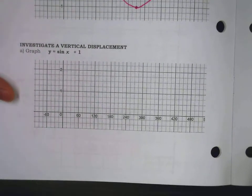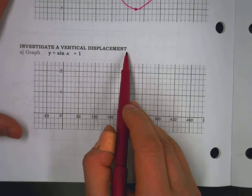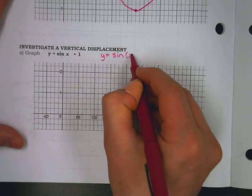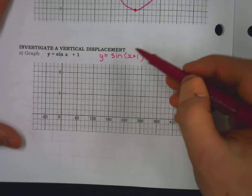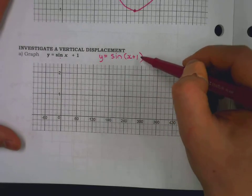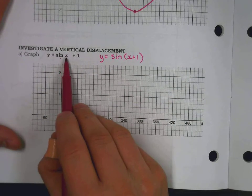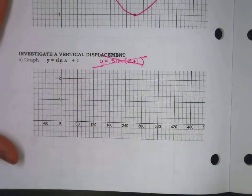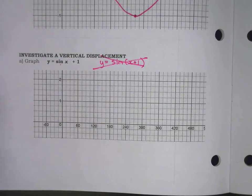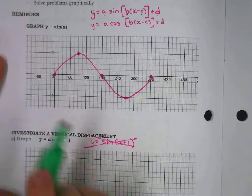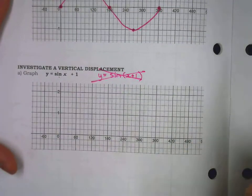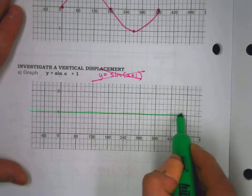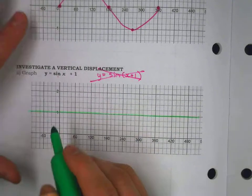Our first thing we're going to talk about is a vertical displacement. There's a very big difference between sine of x plus 1 and y equals sine of x plus 1. We are not talking about sine of x plus 1 — we're talking about sine of x with a D value plus 1, not a C value. The middle of our graph was the x-axis, but now the middle of our graph is going up 1, and this becomes a good reference point. Our amplitude is 1, unchanged.